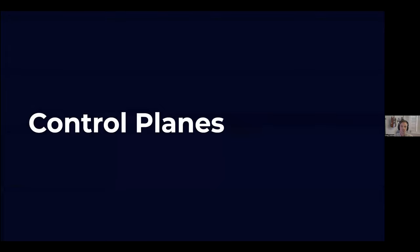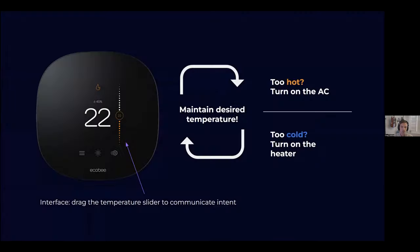Let's do a quick recap of Crossplane and control planes. Think about it like a thermostat — there's an interface and its responsibility is to control the temperature in your home. There's a control loop that constantly checks on a cycle whether the temperature is above or below the desired temperature you've defined. If it becomes too hot, it turns on the AC; if too cold, it turns on the heater. Your interface — the knob or slider — is where you set your desired temperature, and the thermostat's job is to maintain it.